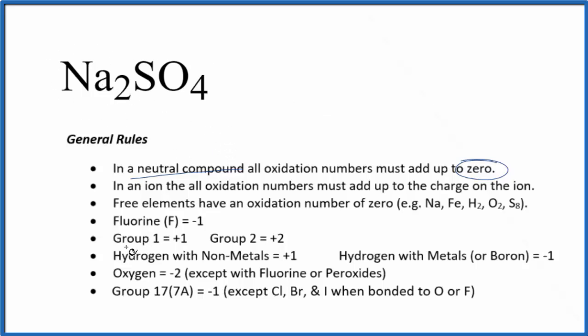We also know sodium is in group one on the periodic table, so each sodium will be plus one. We don't know the oxidation number on the sulfur. Sulfur can have different oxidation numbers depending on what it's bonded to. Let's just call that X. And then for oxygen, oxygen is always minus two with just a few exceptions.